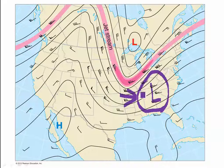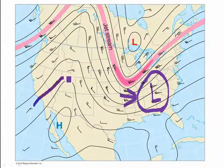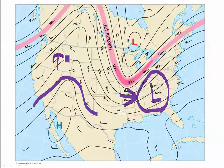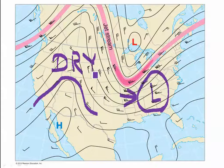wetter than usual, rainy weather — and it's going to be hanging around because we're going to see this pattern for a while. Now in the western U.S., we have the stagnant ridge, so we're going to see persistent, dry, stagnant conditions there in the west.